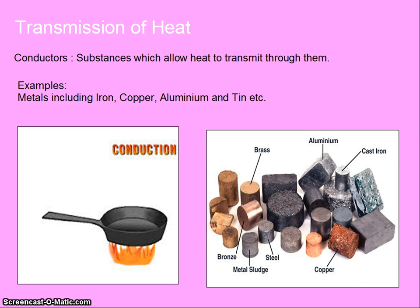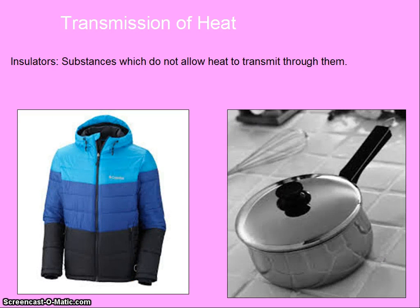There are two types of substances: conductors and insulators. Conductors are the substances which allow heat to transmit through them. Examples of conductors are metals including iron, copper, aluminum, tin, etc. While insulators are the substances which do not allow heat to transmit through them. Paper, wood, ebonite, and cloths are all examples of insulators.